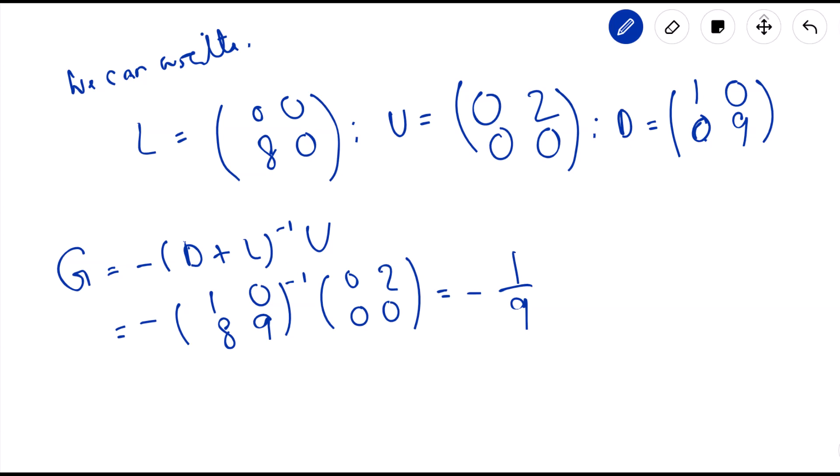The inverse is minus 1 by determinant of the matrix, and diagonal elements are interchanged. So here 9, here 1, and the other elements change sign: 0, minus 8, times 0, 2, 0, 0.